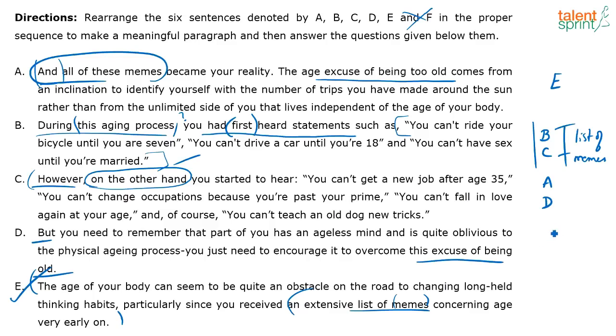So a lot of you came back and gave your own sequences. The final sequence is E-B-C-A-D. The entire passage revolves around age and what has been passed on from generation to generation — the list of memes — with examples. Three things we did: one, two, three. If you got the topic sentence wrong, that's the easiest one to get right because there are always contrast clue words, sequence clue words, synonym clue words, and antonym clue words to help you eliminate.